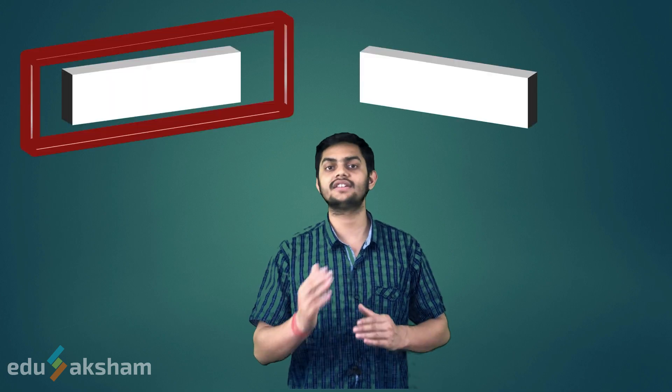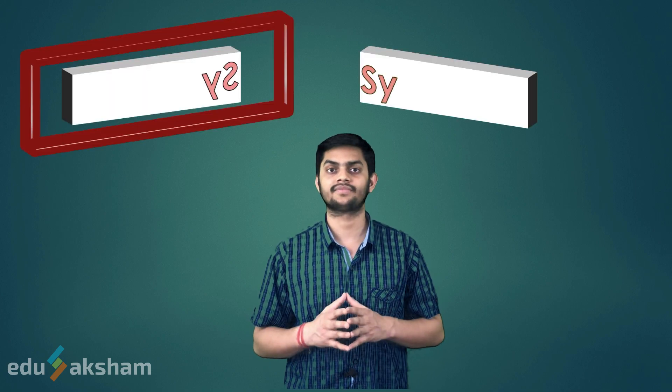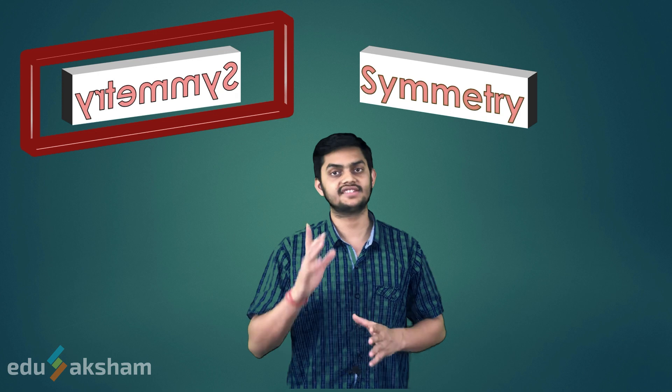Let us take one more example. We saw how an object looks like in a mirror. Now, let us explore what happens when we write something and how it appears in the mirror. Here, we write symmetry. In mirror, its reflection is inverted and each letter is symmetrical to its reflection.